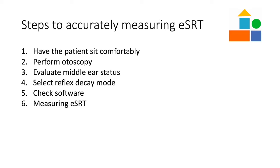Step 6: Once you are ready to begin, start the reflex decay and wait a second or two to see the baseline. Then, with the reflex decay still running, present 2-4 stimulations at the patient's currently worn C level, making sure to allow enough time in the frame to see the onset and offset of a response. It is useful to have the computer audio on to assist in observing responses. If a response is observed on the first presentation, decrease your C level and present again. Continue to decrease C level until a response is not observed.